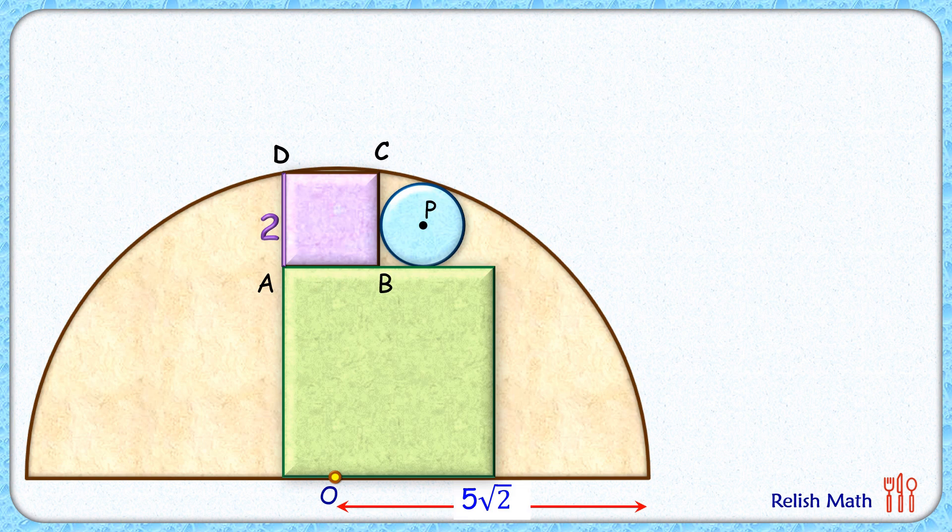Now if we check this purple square here, its vertices C and D are lying on the circumference, and so with respect to this brown semicircle we will treat CD as a chord.